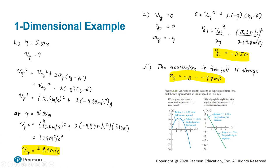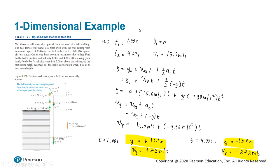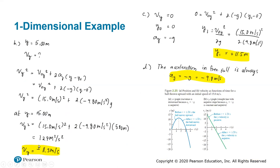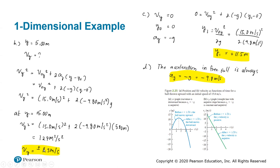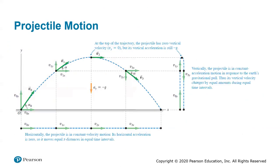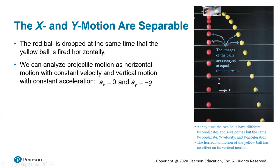At y equals 5 meters, substituting into the equation gives plus or minus 11.3 meters per second. There's a plus or minus because the ball passes through that 5-meter height twice — once going upward and once going downward. The positive value is when it's going upward and the negative is when it's going downward at that same position. Both are 11.3 meters per second in magnitude.